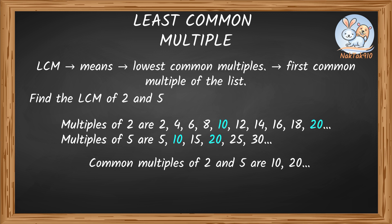Common multiples of 2 and 5 are 10, 20, etc. Among these common multiples 10, 20, etc., the first multiple is 10, so the LCM of 2 and 5 is 10.